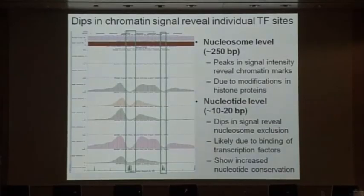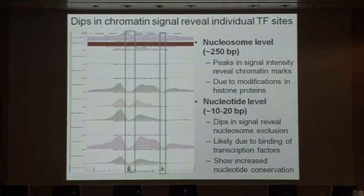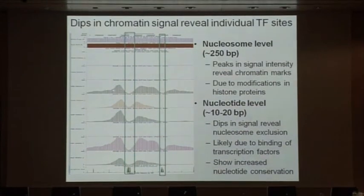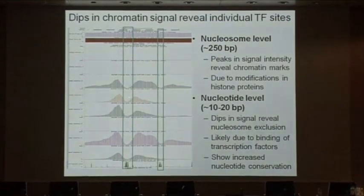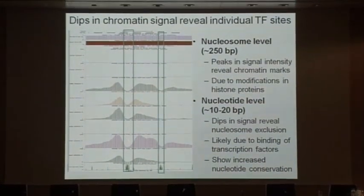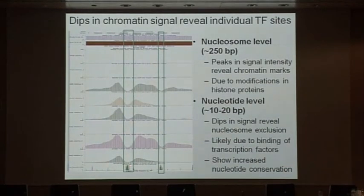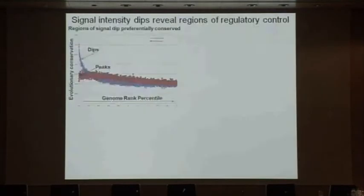We're now using the same chromatin signal, but at a completely different scale. Instead of looking at the peaks of chromatin which you would see from a distance, we're zooming in within these peaks to actually find troughs or dips in the chromatin signal, suggestive of nucleosome displacement associated with transcription factor binding. And indeed, we find blocks of sequence conservation exactly at those dips, validating that perhaps these are the regions driving transcription factor binding.